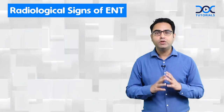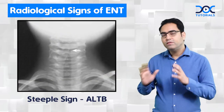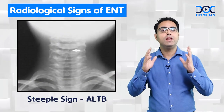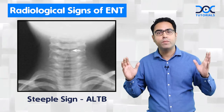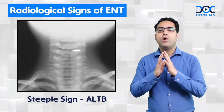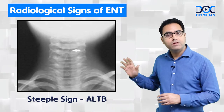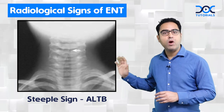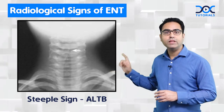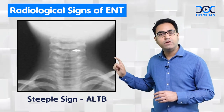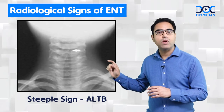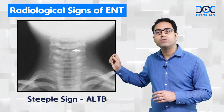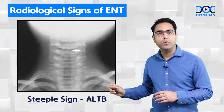Number two: steeple sign. The steeple sign is seen in a case of acute laryngotracheobronchitis, also called croup. Steeple refers to the narrowing of the subglottic area. Look at the white arrow — it is pointing towards the narrowed subglottis, whereas below, the trachea has a normal lumen.